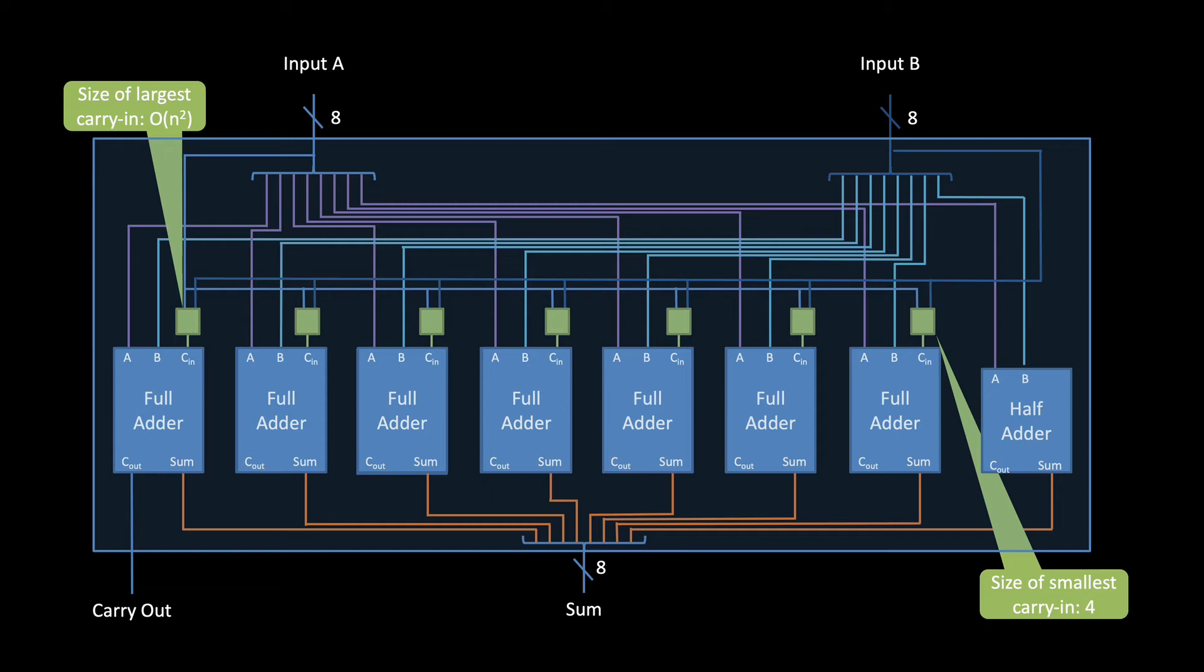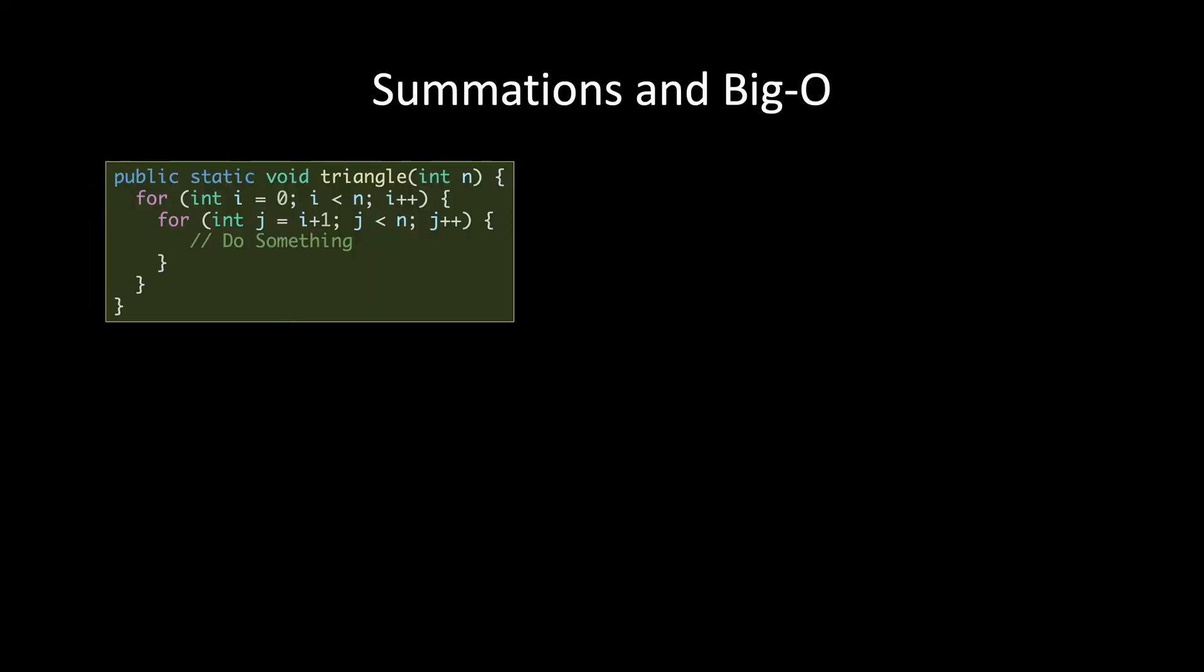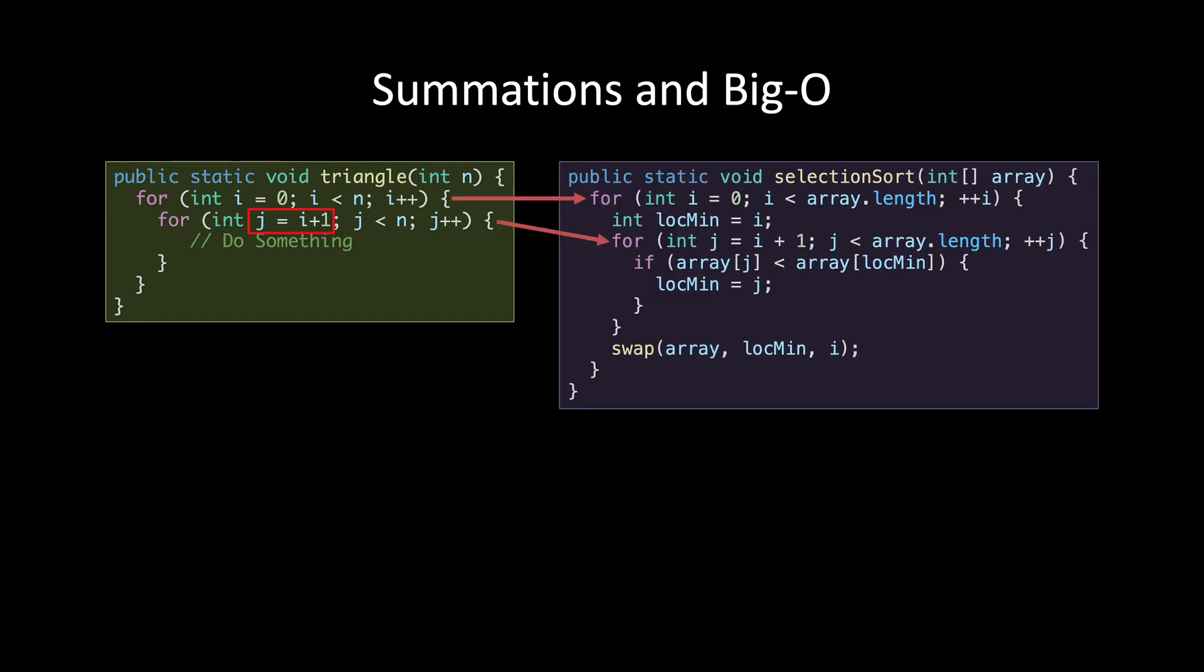Well, not exactly. Do you remember analyzing this particular code pattern when you first learned big O? This nested loop where the inner loop starts at the outer loop's index? This is just the fundamental pattern inside the selection sort. The first time this inner loop runs, it runs N minus 1 times, and then the next time it's N minus 2, and then it's N minus 3, and so on, all the way down until it only runs one time.